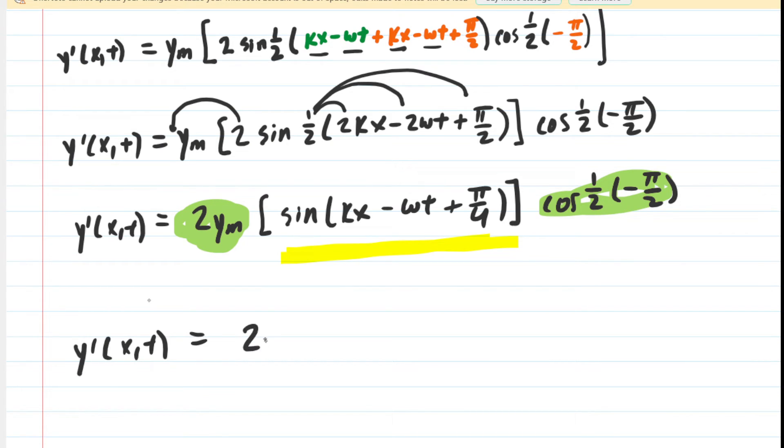In other words, we're going to take those two factors, the 2y_m times the cosine. We can actually simplify that too. If we multiply 1/2 by negative π/2, we're going to get negative π/4. And then we have the sine function.